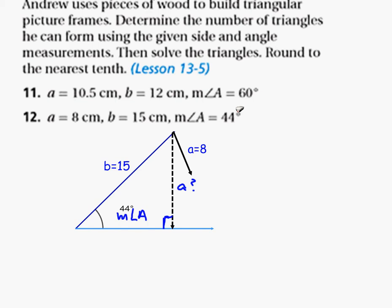Alright, for problem number 12, Andrew uses pieces of wood to build triangular picture frames. Determine the number of triangles he can form using the given side and angle measurements. Then solve the triangles, round to the nearest tenth.